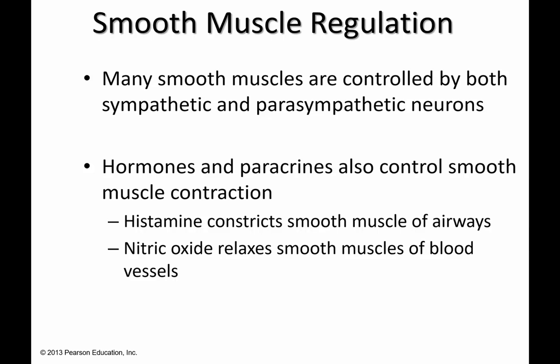The autonomic nervous system — sympathetic and parasympathetic neurons — controls many smooth muscles in the body. There is also control by hormones, which circulate from endocrine organs, and paracrines, which are chemicals released by cells in the vicinity of the smooth muscle. For example, nitric oxide can be made by endothelial cells and will relax the smooth muscle of blood vessels.